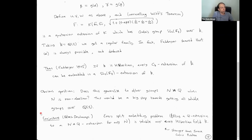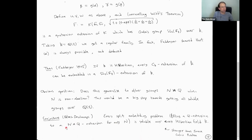The conjecture says that every split embedding problem — lifting a Q extension to an N ⋊ Q extension for any N and Q — is always possible over any Hilbert field. This is a difficult conjecture, much stronger than the inverse Galois problem: you can take Q trivial, so it says you can embed any trivial extension into one with an arbitrary Galois group. But at least it gives an indication of what we expect to be true.